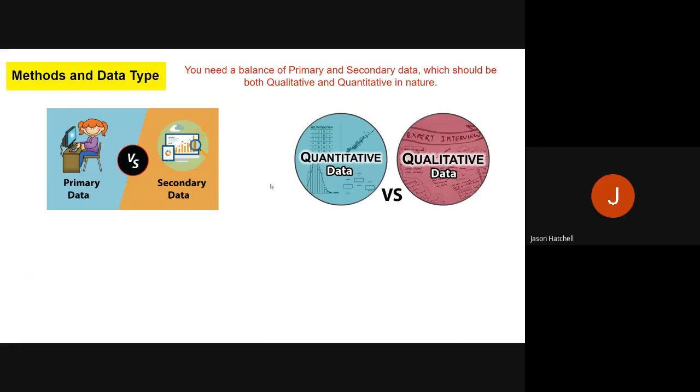On methods and data types, when choosing your methods and looking at data, you need a balance between primary and secondary data and also a balance between qualitative and quantitative data.